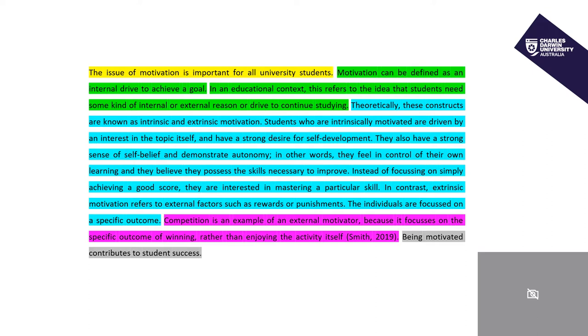Next we have two sentences in green. The first sentence is in the form of a typical definition. Some assignments will require the student to give a definition of a key term; some will not. The second sentence is considered a clarification sentence because it focuses on an educational context, reminding the reader that we're talking about university and not motivation for business people or sports people. It's possible to keep both green sentences, or to choose one over the other — it is a matter of writer choice.